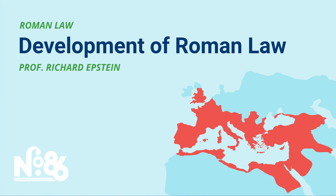The major maxims in Roman law — nemo iudex in causa sua, meaning nobody should be a judge in his own cause, and audi alteram partem, meaning always hear the other side — are in Latin. In English administrative law these are called principles of natural law. In the American context, we call them principles of due process, based on the due process clauses in both the 5th and 14th Amendments. The Romans certainly had these principles, but they could always be trumped by someone else. If you do not have principles of procedural due process, the substance of rules will not survive.